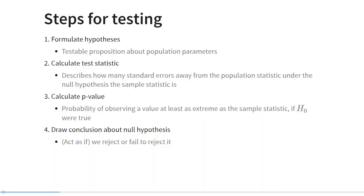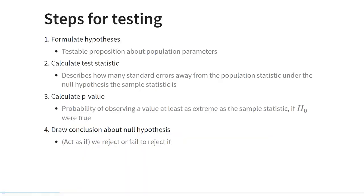In general, when we formulate hypotheses we follow four steps. First, we formulate hypotheses, which could be derived from theory. A hypothesis is a testable proposition about the value of population parameters. Second, we calculate a test statistic — which statistic we calculate depends on what quantity we are testing. In general, every test statistic tells us how many standard errors away from the population statistic under the null hypothesis the observed sample statistic is.